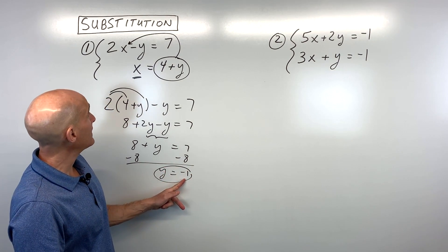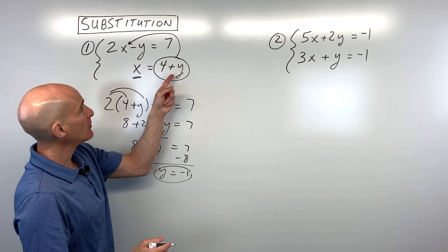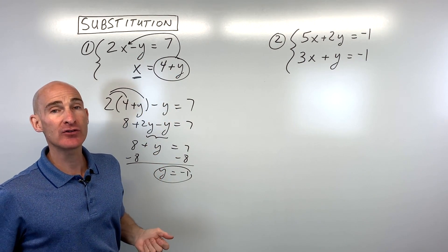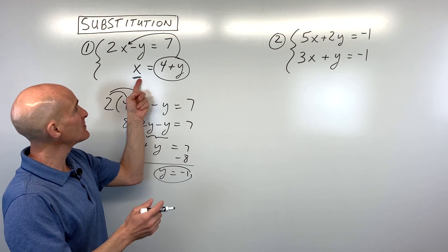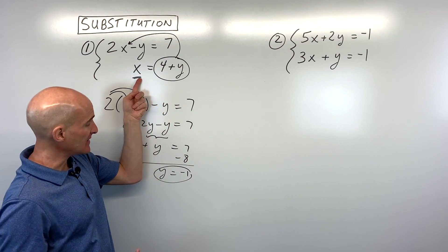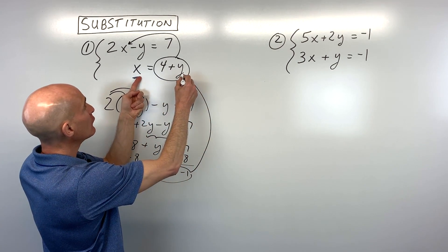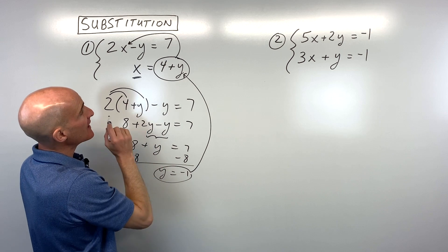Now you can take negative 1 and put it back in for either y. It doesn't matter - you'll get the same answer when you solve for x. This one's easier since we already have x by itself. So let's put negative 1 in for y: 4 plus negative 1 is 3.